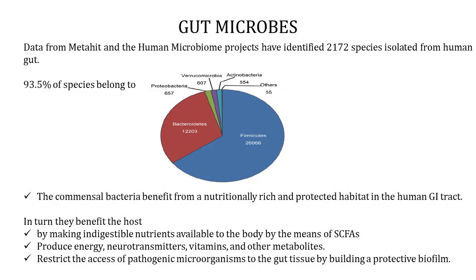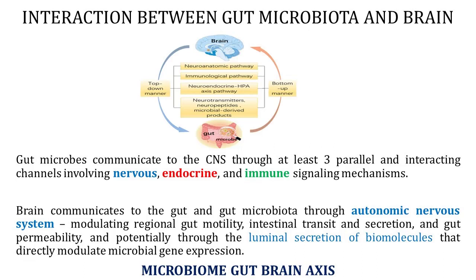We learnt about the functions of the gut microbiota in brief. Now, let us pick up more information on the interaction between gut microbiota and the brain. The gut microbes communicate to the central nervous system through three channels: nervous, endocrine and immune signaling mechanisms. In turn, the brain communicates to the gut and gut microbiota through the autonomic nervous system, by modulating regional gut motility, intestinal transit and secretion, and gut permeability.